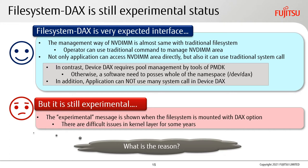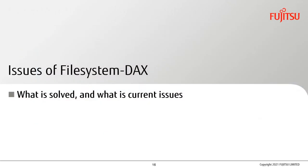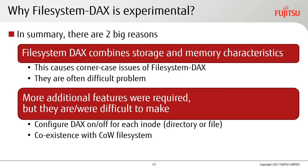There have been difficult issues in the kernel layer for some years. I will explain the issues of file system DAX — what has been solved and what remains. In summary, there are two big reasons: first, file system DAX combines storage and memory characteristics, causing difficult corner case issues. Second, more additional features were required but were difficult to implement, such as configuring DAX on and off per inode, and coexistence with copy-on-write file systems.